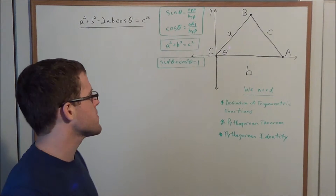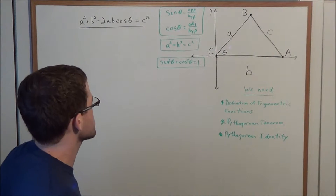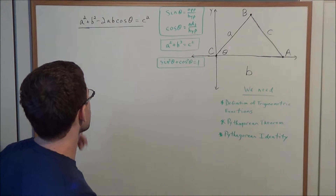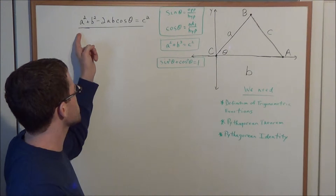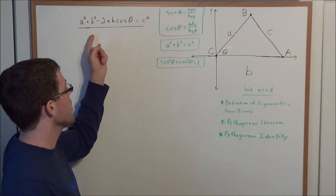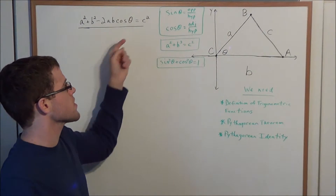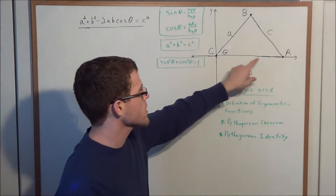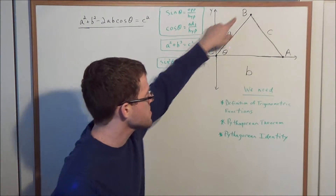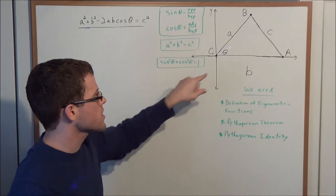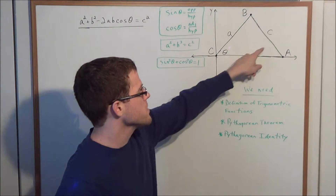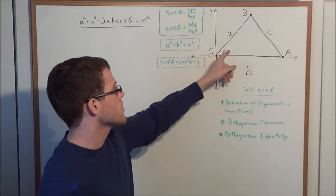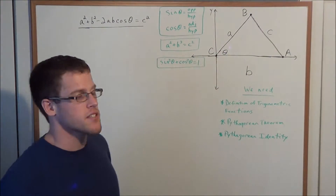Hello YouTube students, my name is Vincent and today I want to take a look at a proof of the law of cosines. In particular, I want to prove that a squared plus b squared minus two times ab cosine theta equals c squared, when we have some triangle ABC with side lengths lowercase a, lowercase b, and lowercase c, and also angle theta at vertex C.